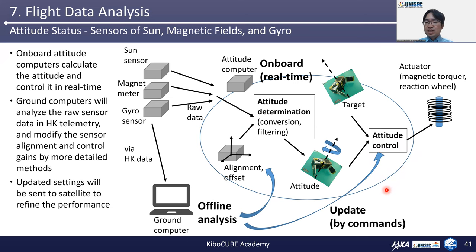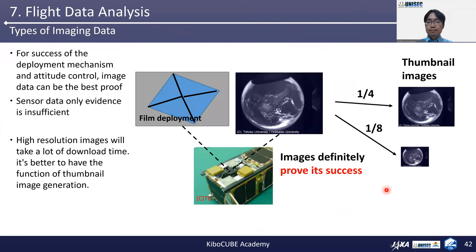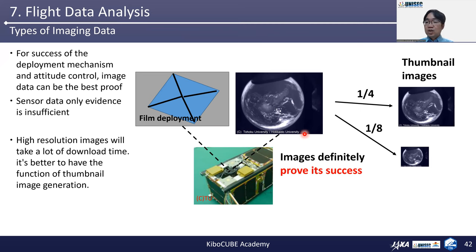Updated settings will be sent to the satellite to refine the performance. For the success of deployment mechanism and attitude control, image data can be the best proof of confirmation — only sensor data is insufficient evidence. The onboard computer will always believe its result is true, but the real situation can be the inverse direction if the sensor alignment or something else is wrong. You cannot show the attitude precision only by attitude sensor data. The image data will be the most clear evidence. Also, the temperature of solar panels or structure temperature can possibly be used as a second proof to understand the solar and Earth direction.